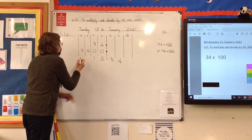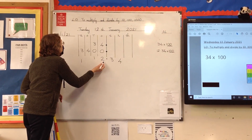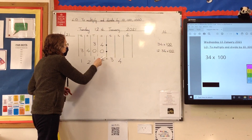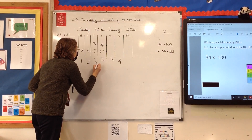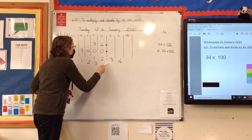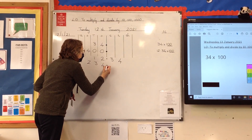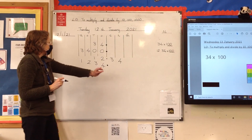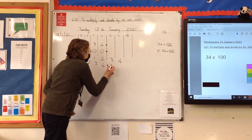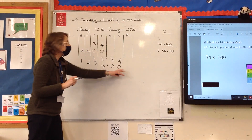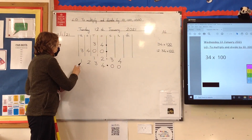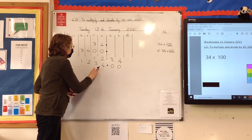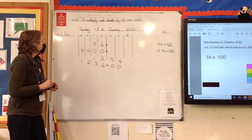The one ten will move to the thousands. The two ones will move to the hundreds. The three tenths will move two places into the tens column. And the four hundredths will move two places into the ones column. The decimal point always stays where it is — it never, ever moves. You don't actually need to put zeros in there because there aren't any decimal numbers anymore — that decimal number has changed into the whole number 1,234. So that's how we multiply.